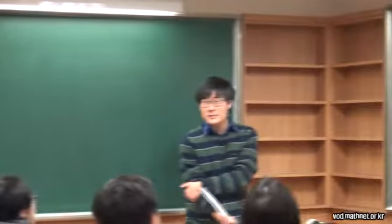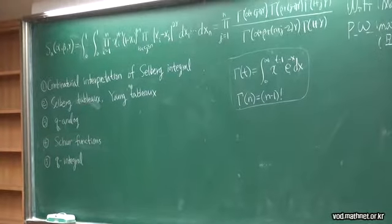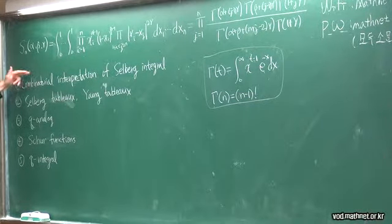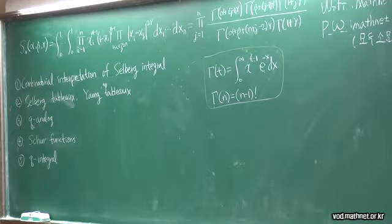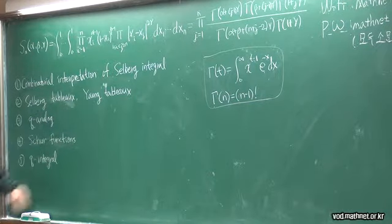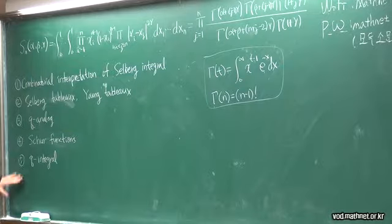My talk is about the combinatorics of the Selberg integral. The Selberg integral is a multiple integral evaluated by Selberg in 1944 — 70 years ago. I'm going to give a combinatorial interpretation due to Richard Stanley, who expressed it in terms of permutations. Then I'll introduce a new object essentially equivalent to Stanley's permutations, show a connection between Selberg tableau and Young tableau, and finally discuss the Q-analog of the Selberg integral.